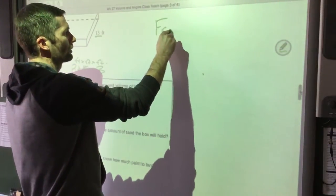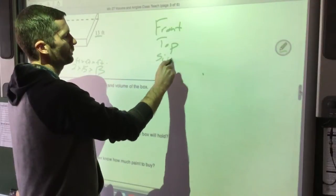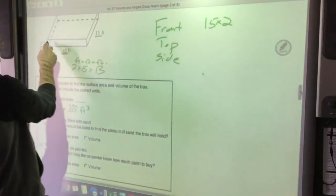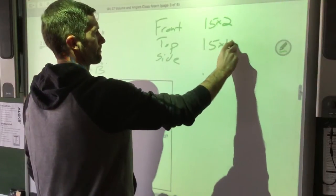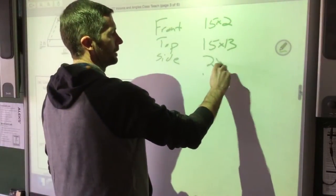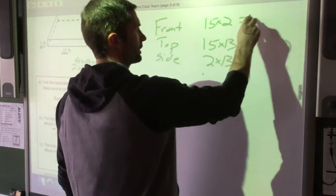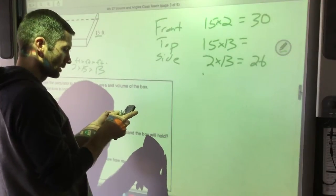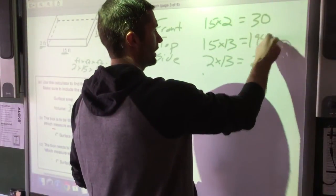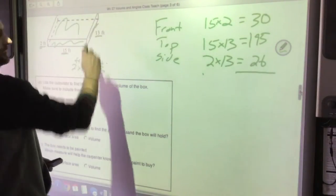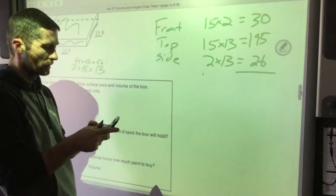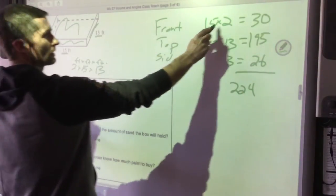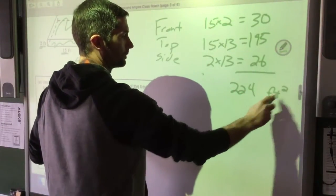Okay, surface area. Remember how we did this last week. We're going to find the front, we're going to find the top, we're going to find the side. We're going to find everything we see. Here's my front, which is 15 times 2. Here's my top, which is 15 times 13. Here's my side, which is 2 times 13. Notice I used each of these numbers twice. 15 times 2 is 30, 2 times 13 is 26, 15 times 13 is 195. Okay, so let's add up what we see. 195 plus 30 plus 26 is 224. This is what we see, it's feet times feet, so it's feet squared.